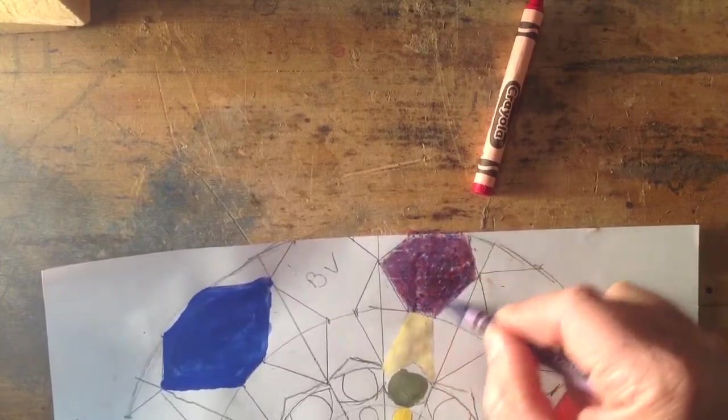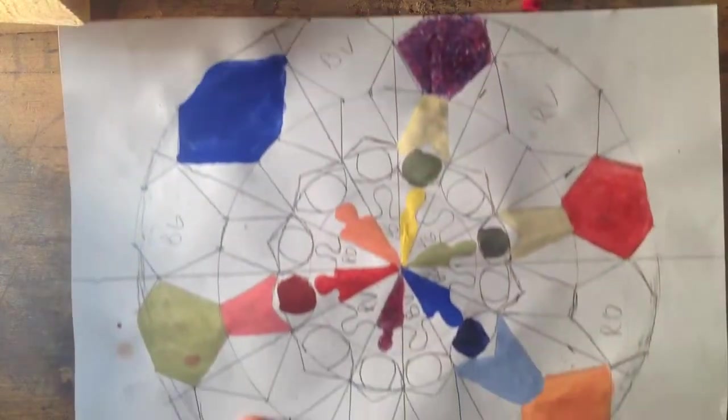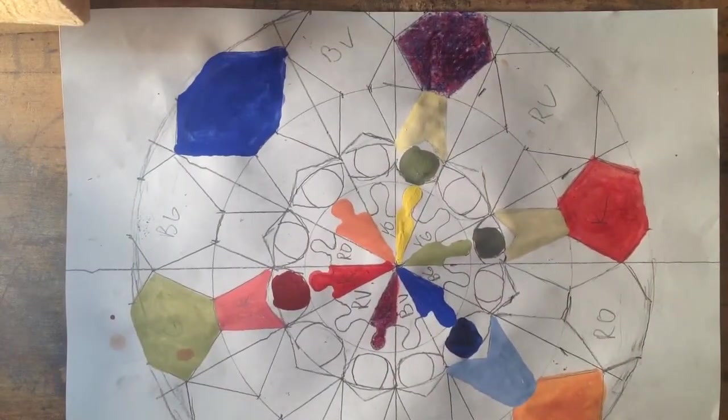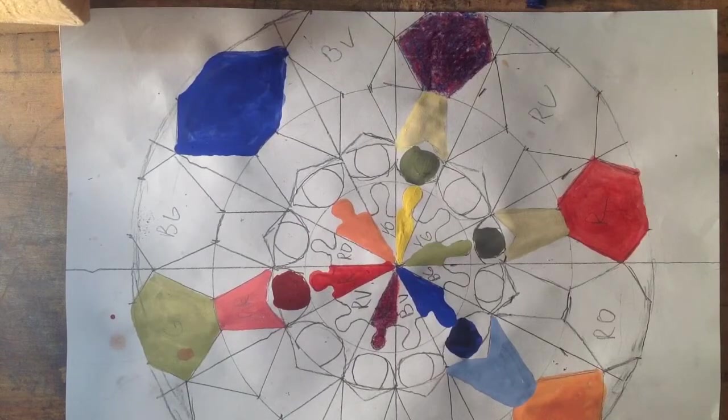So not perfect, but it did give kind of the idea of the violet there. So that's crayon, mixing colors with crayons to make your colors. The other ones that I've been mixing are paints. Paints are super easy.